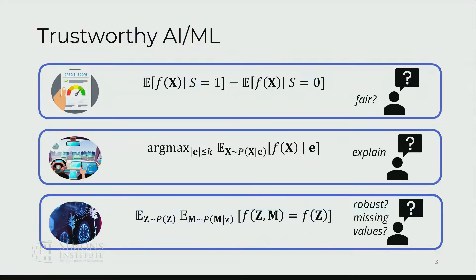You could, for example, ask how robust some decision made with missing values is by looking at how much that decision will change if you consider all the possible ways that those missing values can be completed according to some distribution.